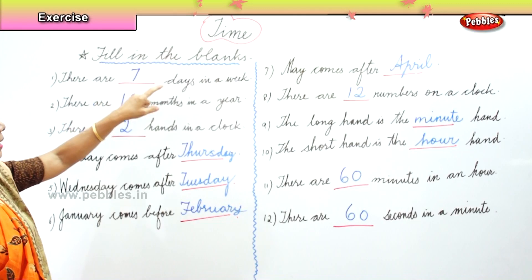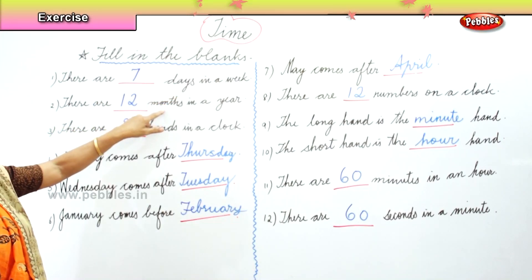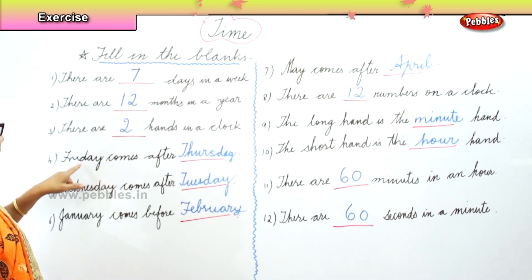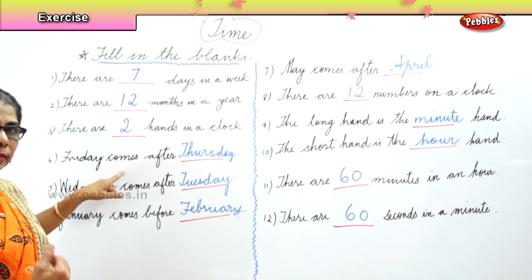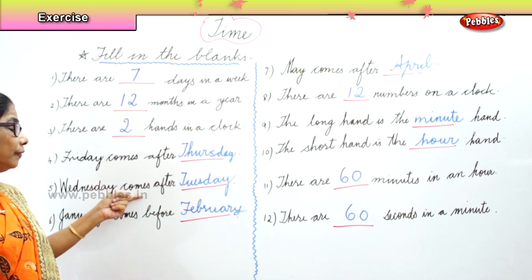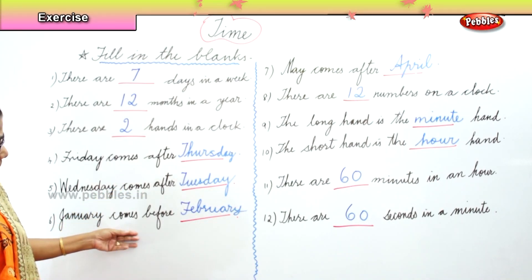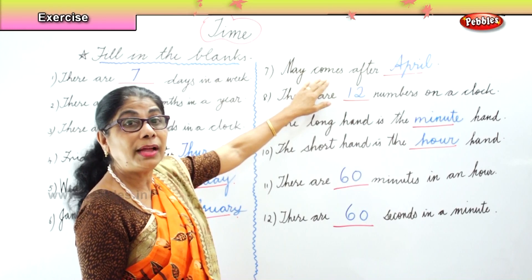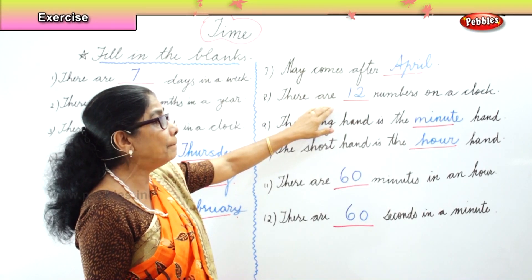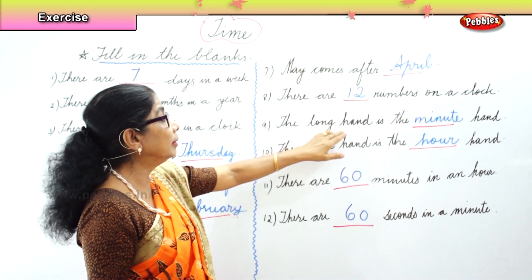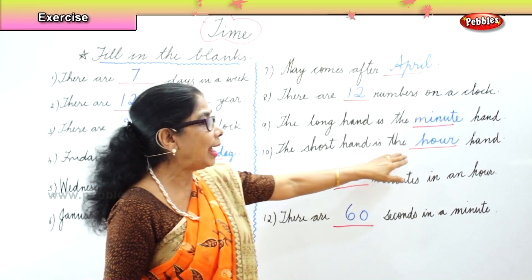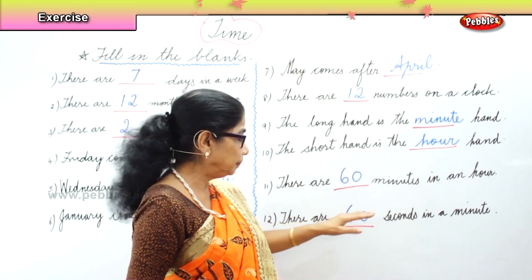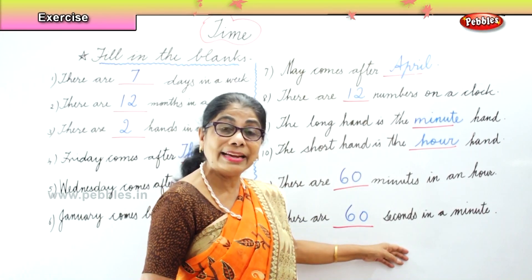There are seven days in a week. There are twelve months in a year. There are two hands in a clock. Friday comes after Thursday. Wednesday comes after Tuesday. January comes before February, and May comes after April. There are twelve numbers on a clock. The long hand is the minute hand. The short hand is the hour hand. There are sixty minutes in an hour, and there are sixty seconds in a minute.